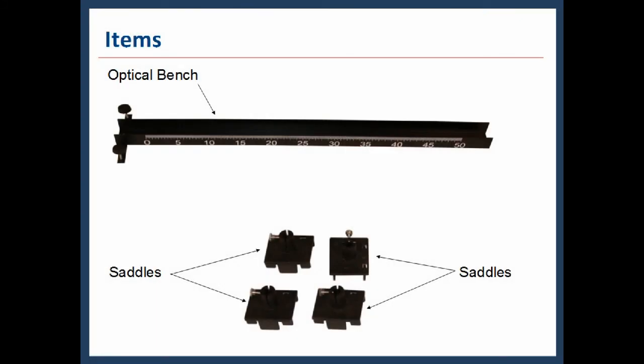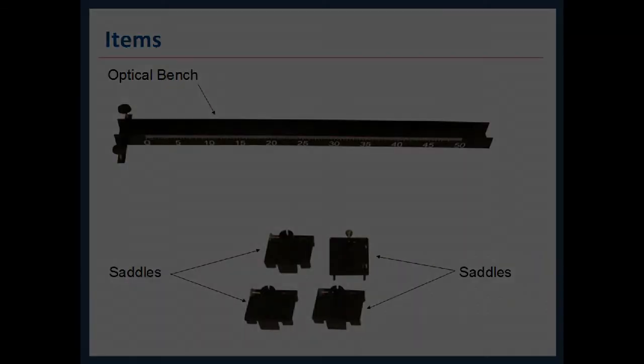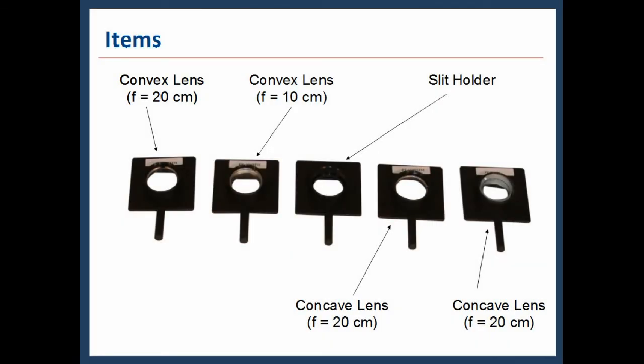At first, we will look into the items provided with this experimental setup. The first item is the optical bench along with four saddles. There will be two convex lenses and two concave lenses. A slit holder is also provided.